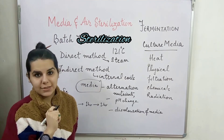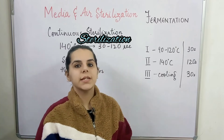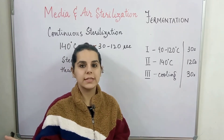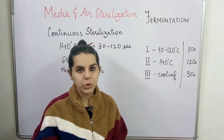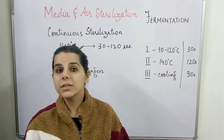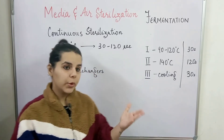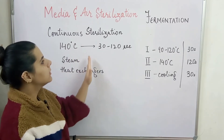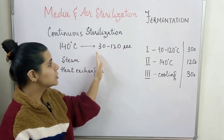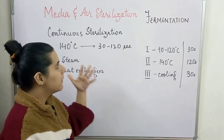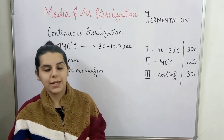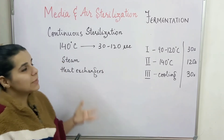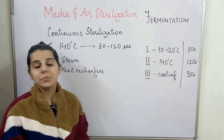Now I'm going to talk about continuous sterilization. In batch sterilization, a lot of time is required to attain 121°C and the sterilization and cooling cycles are very long, making energy consumption very high. In continuous sterilization, the temperature used is 140°C and the time required is just 30 to 120 seconds — compared to approximately one hour for the batch sterilization cycle.